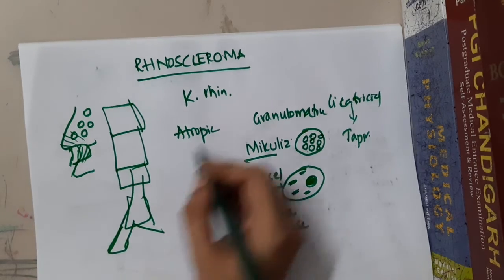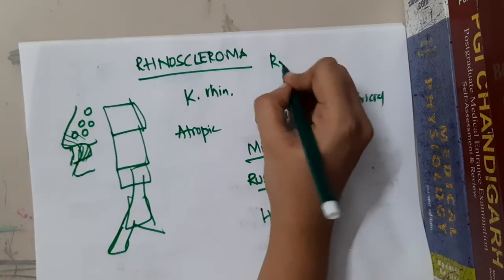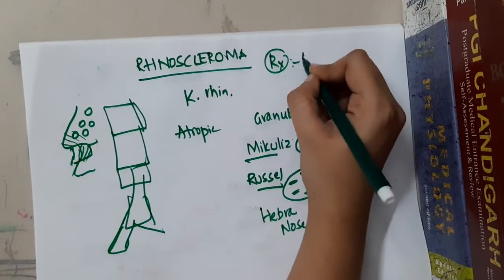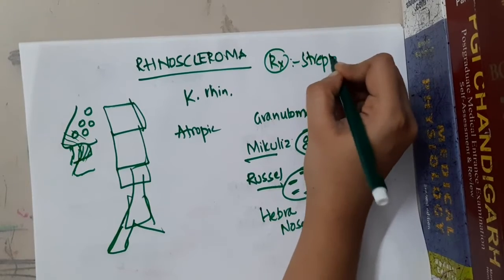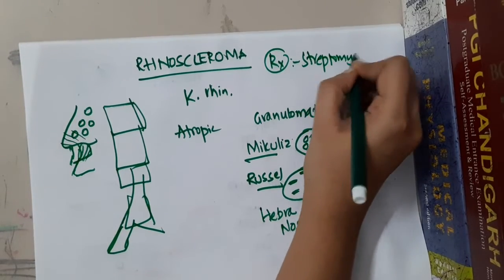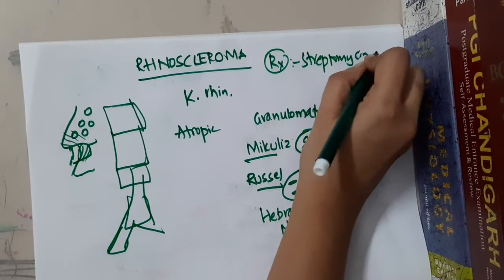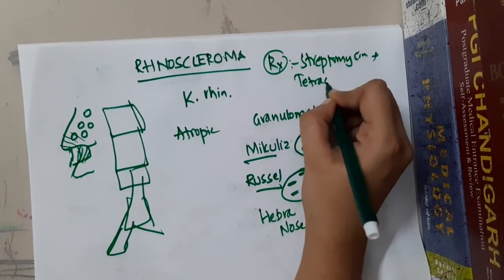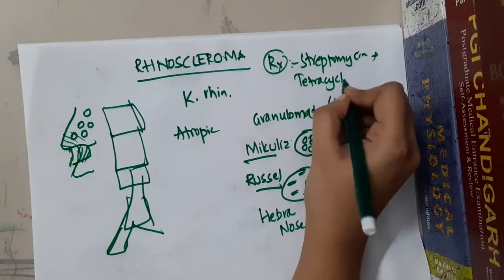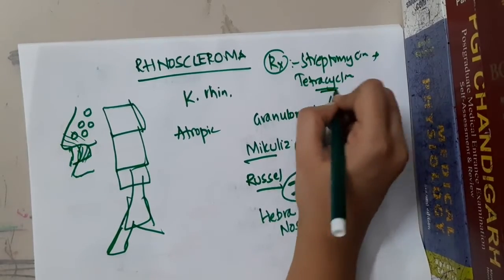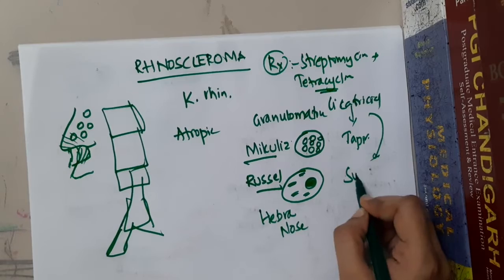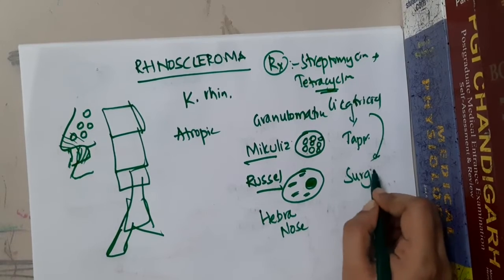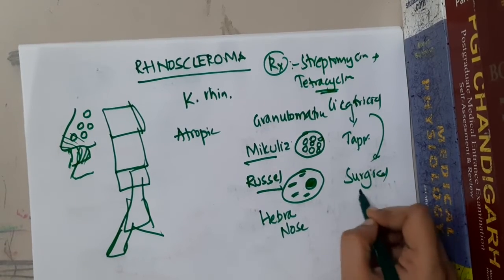The treatment of rhinoscleroma mainly involves giving streptomycin for two days, followed by tetracycline. If there is a cicatricial area, surgical dilation can also be done.